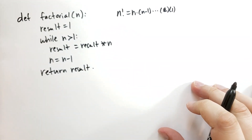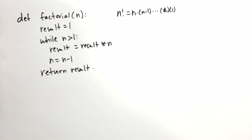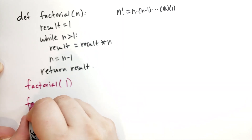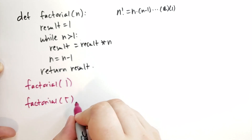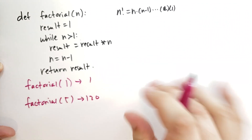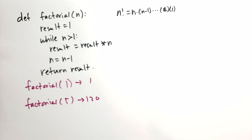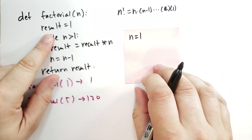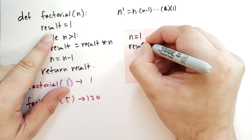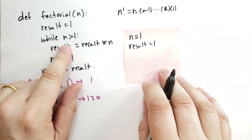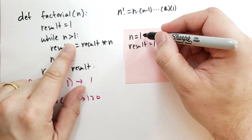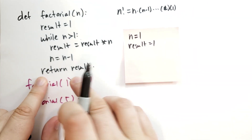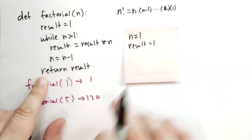Let's analyze this function to see how the while statement works. There are three cases: factorial of 1, factorial of 5, and we know factorial of 5 should be 120, and 1 should be 1. For factorial of 1, n is set to 1, result is assigned 1. Then we run the while statement and check the condition: is n greater than 1? No, n is not greater than 1, so we do not execute the loop. We continue with the return statement, returning result, which is 1. This function works properly for that value.